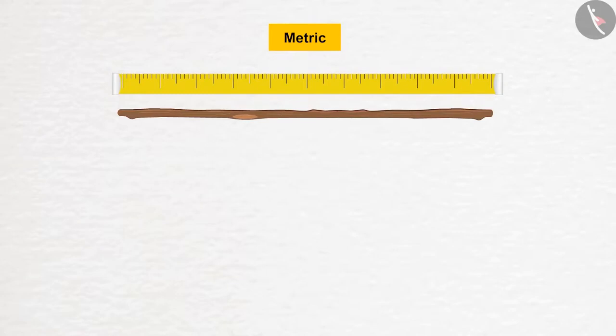For measuring long distances, distance equal to 1000 sticks was said to be one kilometer. In English, kilo means 1000 meters.